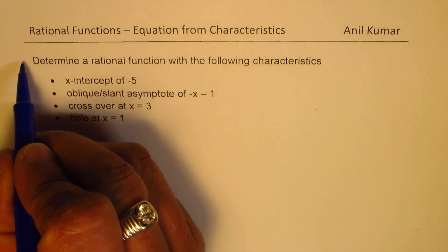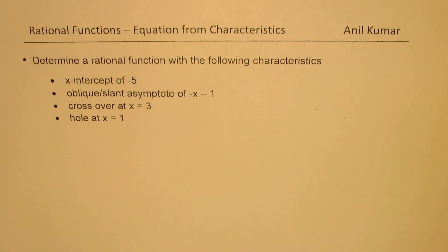And the description is kind of unique since the graph is crossing over an oblique asymptote. So the question here is, determine a rational function with the following characteristics: